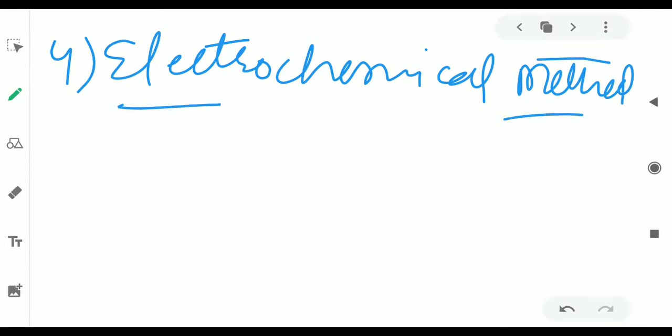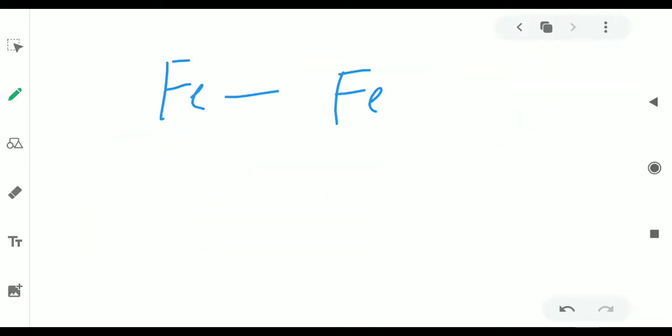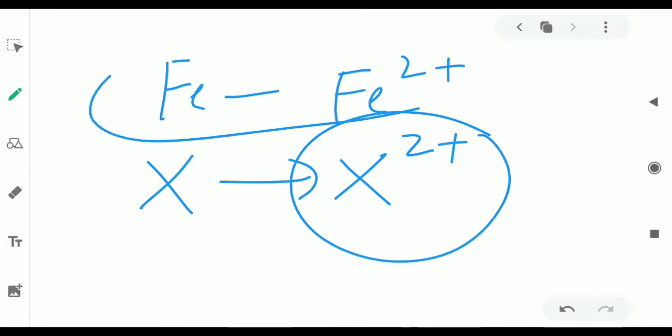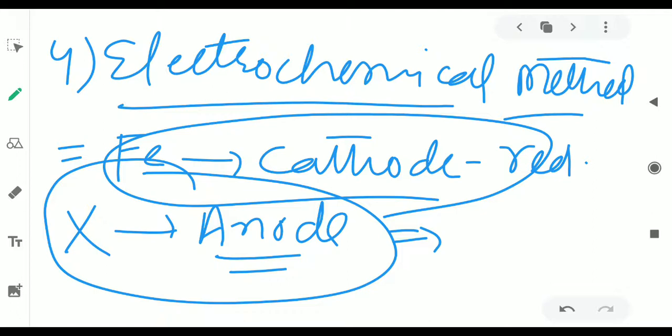After this, electrochemical method. In electrochemical method, I'll explain with an example. Suppose we want to save iron, so we make this iron a cathode. Cathode means where reduction happens. And we bring another active metal X, which we make anode. More active means one that is more reactive than iron. Because in rusting what happens, iron gets oxidized to form Fe²⁺ because it's reactive. But if X is more reactive than iron, it will preferentially react there, meaning it will react before iron, get oxidized. So our iron, oxidation won't happen on iron. We connect this reaction with some wire to the iron block. Then reduction will happen here. As a result, our iron will be saved. X will get oxidized. Its corrosion will happen.